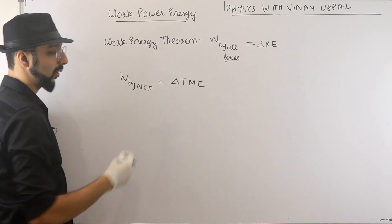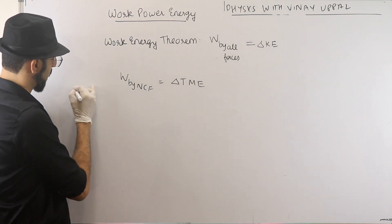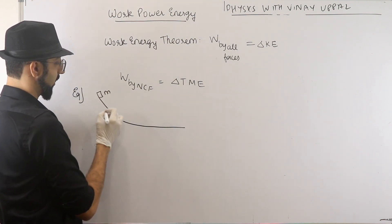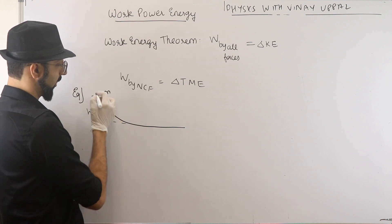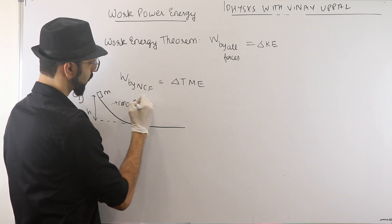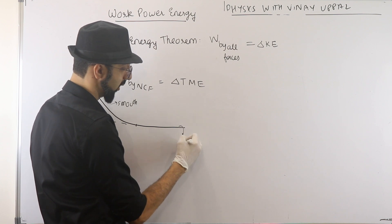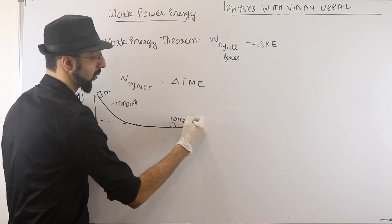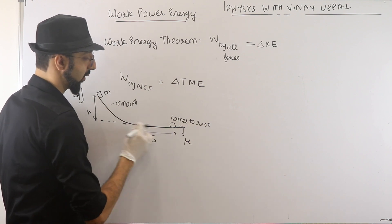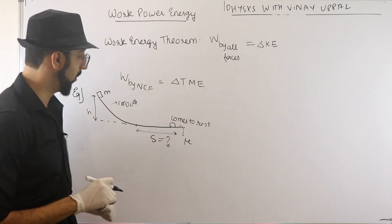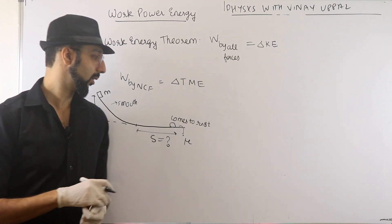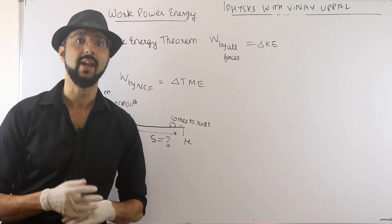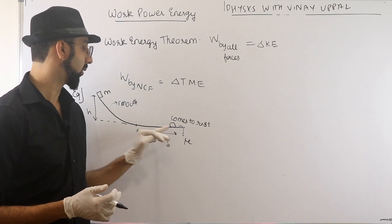Let's see friction work done with an example. Suppose I have a block released from a height h. This curved path is smooth, but the horizontal portion is rough with friction coefficient mu. The block is released, slides down, and ultimately comes to rest because of friction. The question is how much distance it will travel on the horizontal portion till it comes to rest.